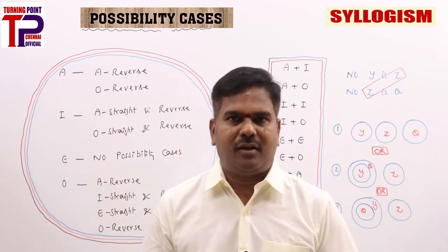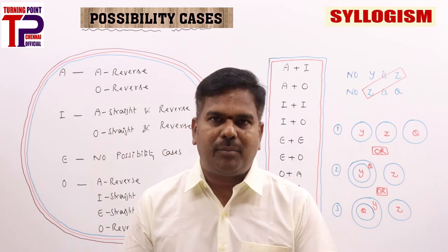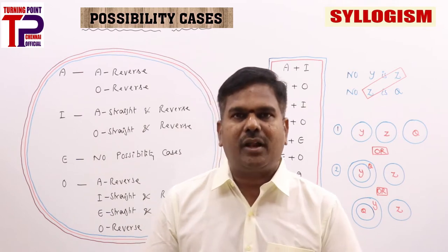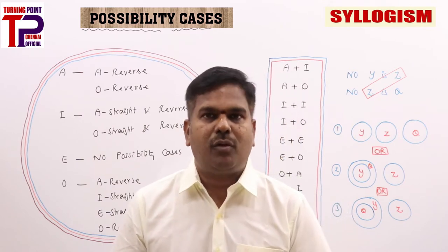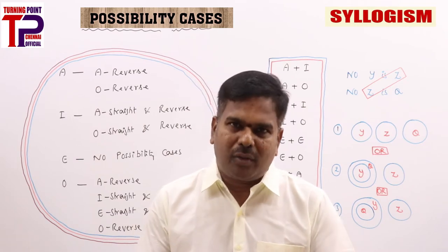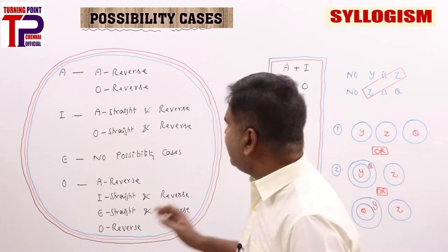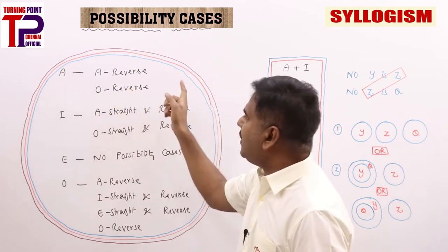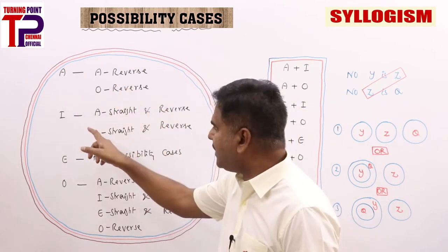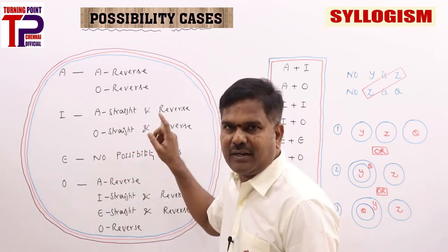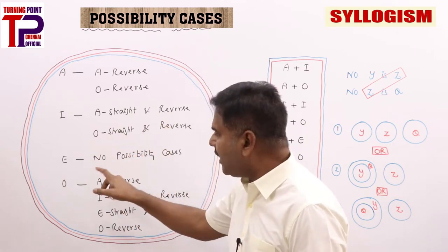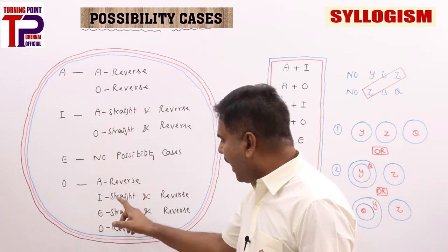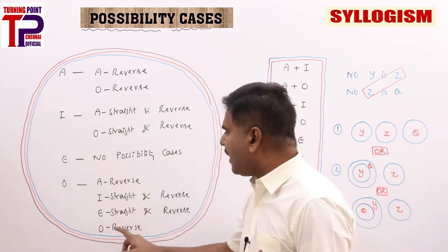We have seen possibility cases explained in detail. For A, the possibilities are A-reverse and O-reverse. For I, the possibilities are A-straight, A-reverse, O-straight, and O-reverse. For E, there are no possibilities. For O, the possibilities are A-reverse, I-straight, I-reverse, E-straight, E-reverse, and O-reverse.